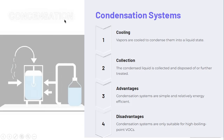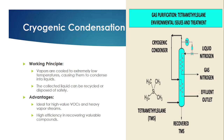In condensation, vapors are cooled to condense into a liquid state. The condensed liquid is collected and further treated. The advantage is that it is simple and energy efficient. The disadvantage is that it is only suitable for VOCs with a high boiling point. The cryogenic type of condensation is used for specific chemicals like LNG/LPG type chemicals. Vapors are cooled to extremely low temperatures, causing them to condense into liquid. The collected liquid can be recycled or disposed of safely. It is ideal for heavy vapor streams with high volatile organic compounds and is very efficient at recovery.